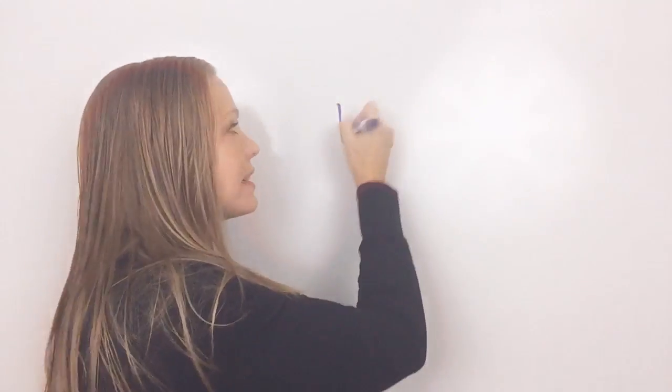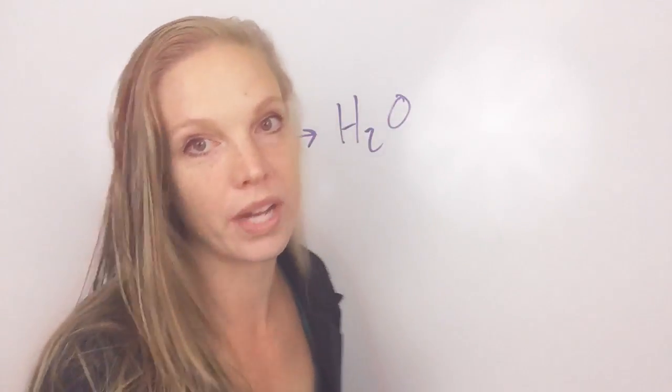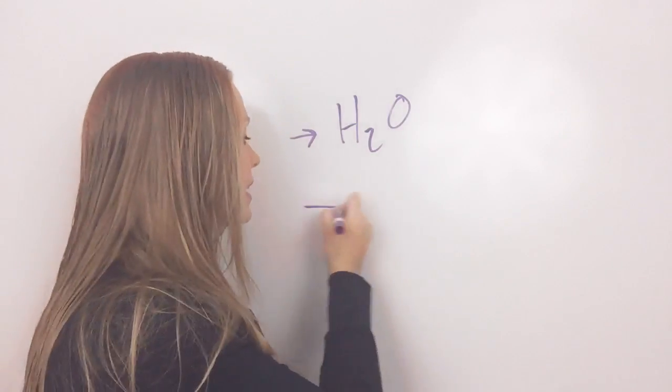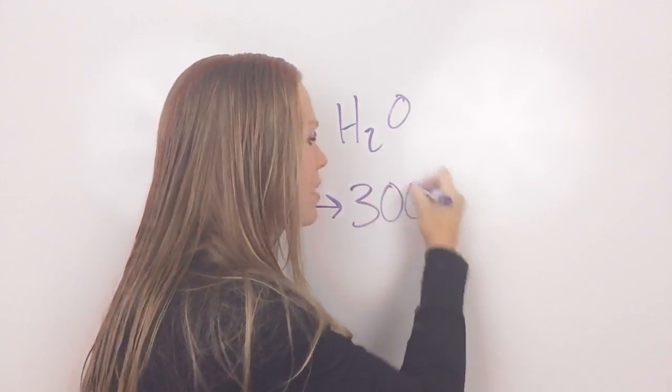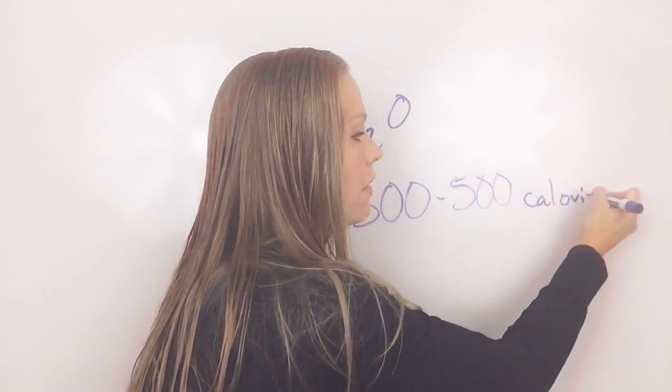So here is a great kind of benchmark to go by as you are planning out an intermittent fasting day. Well first, lots of water, right? Tons of water. That's got to be number one. You need to hydrate, hydrate, hydrate a lot. The second thing you're going to be doing is you're going to have anywhere from 300 to 500 calories for the day.